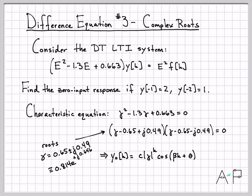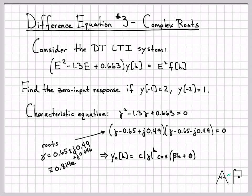For complex conjugate roots, we know the form of the zero input response — it's written as a damped cosine. It's a cosine with some frequency beta and some angle theta, multiplied by an unknown constant C, where the damping factor is the magnitude of the root raised to the K. This is the form we're going to use, and our job is to figure out what C, gamma, beta, and theta are.